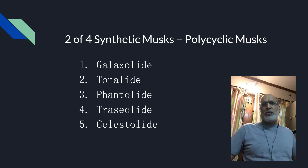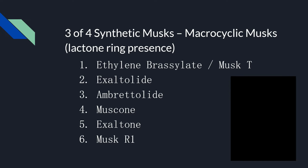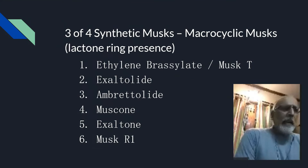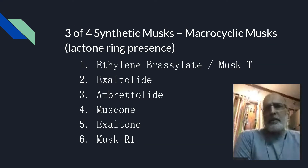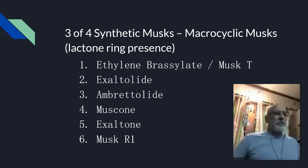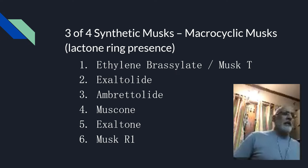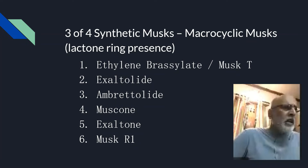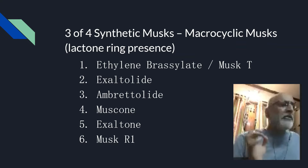The third class is macrocyclic musk. Within macrocyclic musk we have ethylene brasilate — also called musk T — exaltolide, ambritolide, musk cone, exaltone and musk R1. These are the classic macrocyclic musks available in modern perfumery. Chemically, macrocyclic musks contain a lactone ring with more than 12 members — the rings are 12 to 15 members. We will be discussing in detail ethylene brasilate, also called musk T — T as in Takasago.